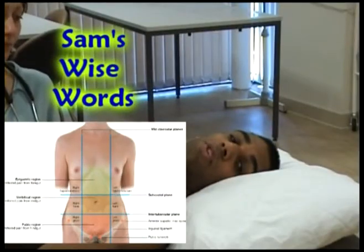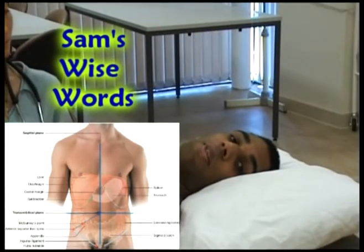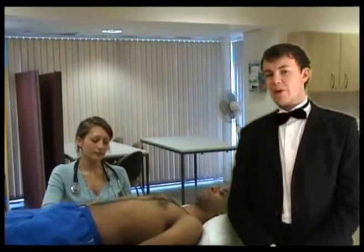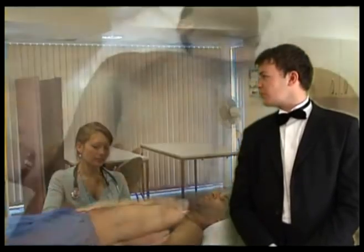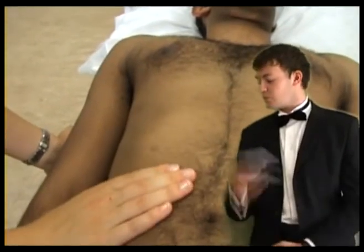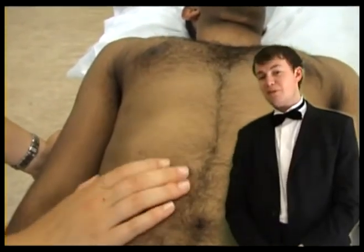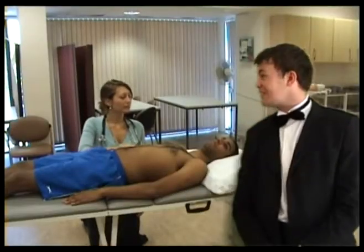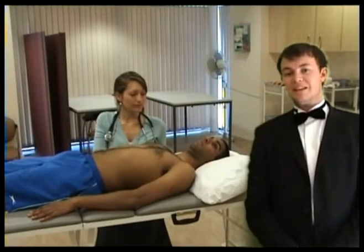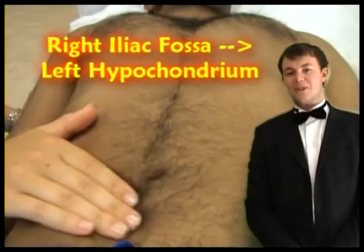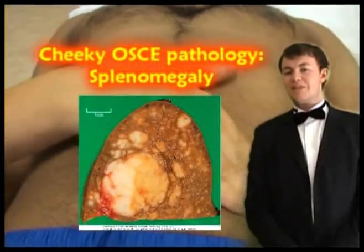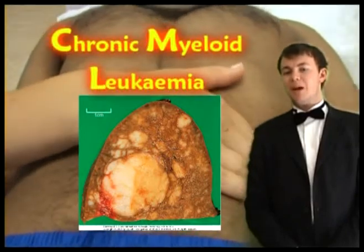Make sure you remember which viscera are in each area that you palpate. Palpate for a liver edge by pressing in on consecutive inspirations. If you feel an edge, state whether it is hard, irregular or even pulsatile. Now attempt to palpate for the spleen, starting in the right iliac fossa and walking your way across to the left hypochondrium. A large spleen may be found in CML due to invasion by malignant cells.